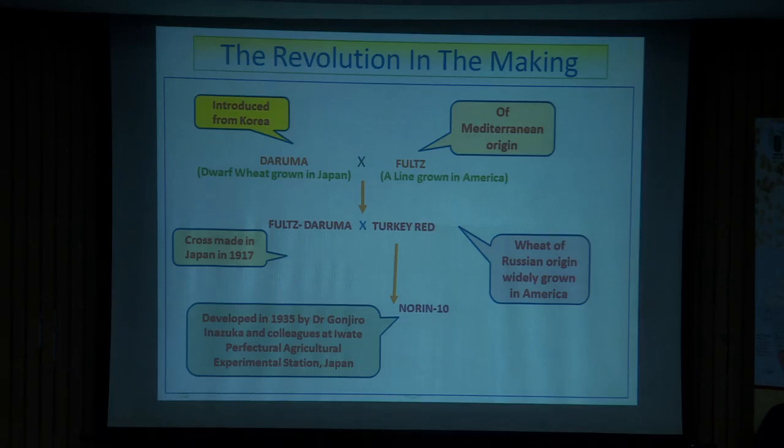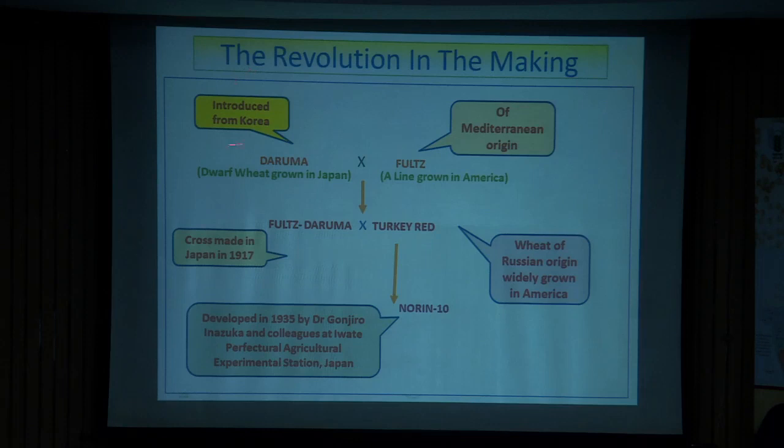Japan and other countries were sidelined and research work stalled. But then a fellow named Gonjiro identified this one dwarf line — the dwarfness derived from the Korean line. It was very dwarf with a sturdy structure, and he started evaluating it at their station in Japan.